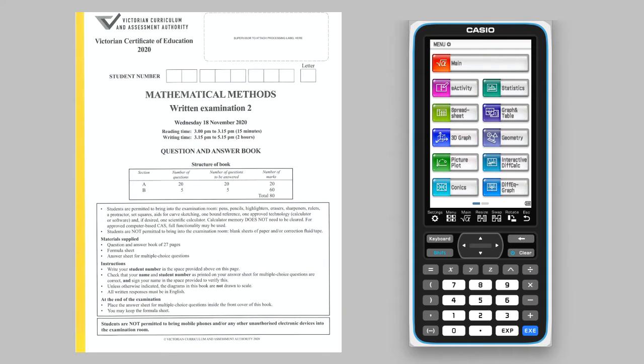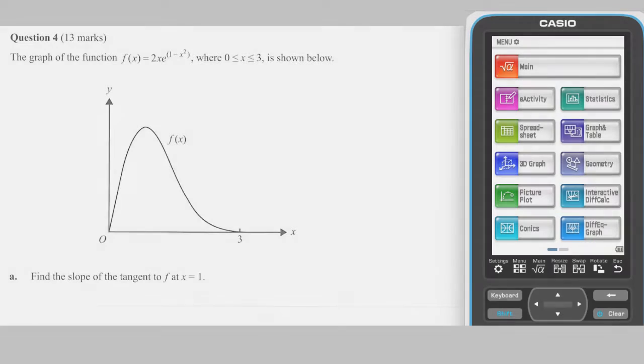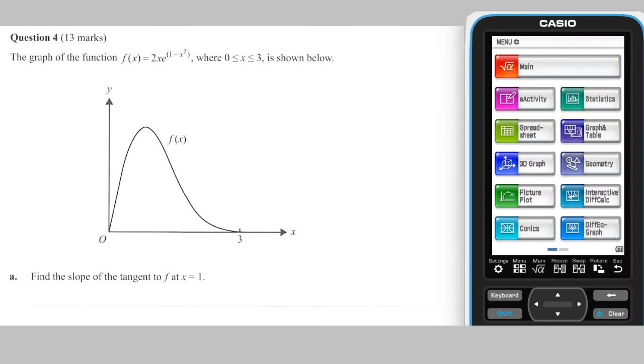This video will present solutions to the VCE 2020 Mathematical Methods Written Examination Question 2, Section B, Question 4. This question has us working extensively with the function f(x) = 2x·e^(1-x²).